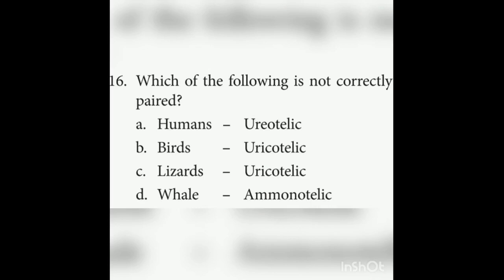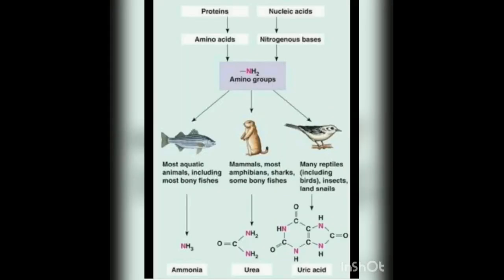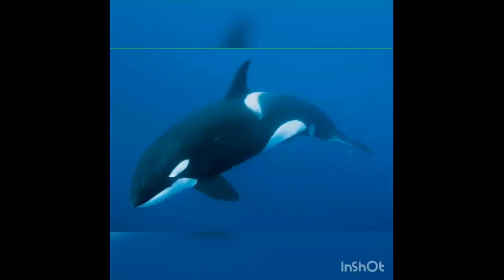Sixteenth question: Which of the following is not correctly paired regarding excretion? Humans excrete urea — they are ureotelic. Birds excrete uric acid — they are uricotelic. Lizard is also uricotelic. Whale is a mammal, not a fish, so it excretes urea and is ureotelic. Therefore, 'whale — ammonotelic' is not correctly matched. The answer is whale-ammonotelic.